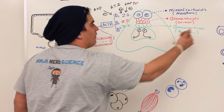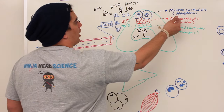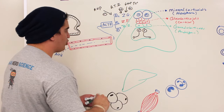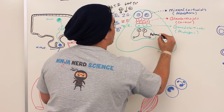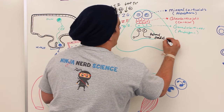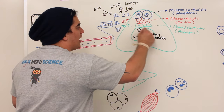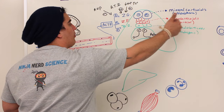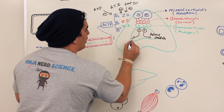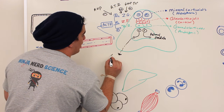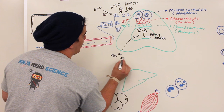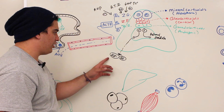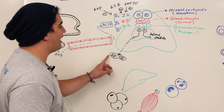The adrenal medulla is made up of neural tissue — it contains postganglionic motor neurons. When stimulated by the sympathetic nervous system through the thoracolumbar output, it secretes epinephrine and norepinephrine. These chemicals help stimulate gluconeogenesis, glycogenolysis, and lipolysis, and they increase blood pressure.